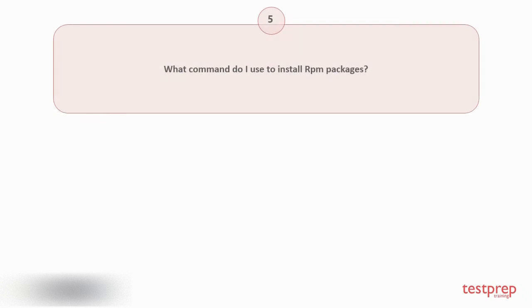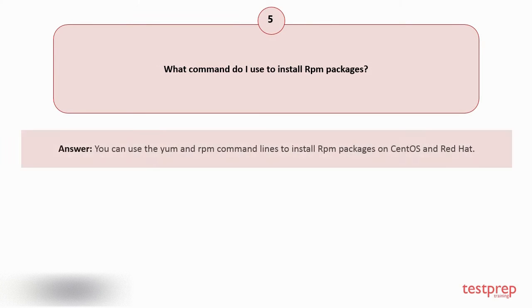Question number 5: What command do I use to install RPM packages? You can use the YUM and RPM command lines to install RPM packages on Red Hat Linux.